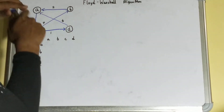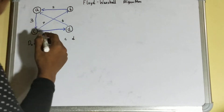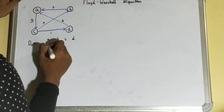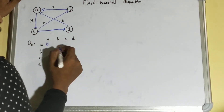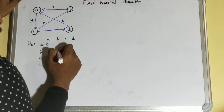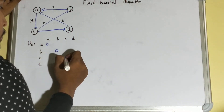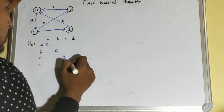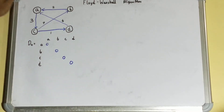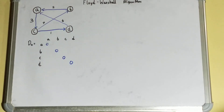In your diagonal places you need to place zero, because the distance from a particular vertex to that same vertex is zero. So we keep zero on the diagonal — for example, A to A is zero, C to C is zero. For all other entries we will determine the values next.